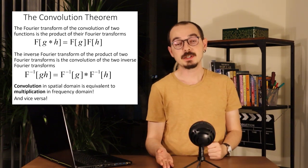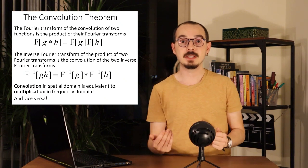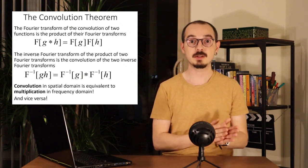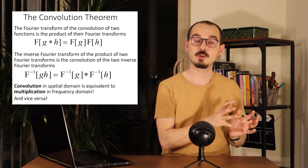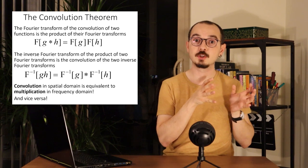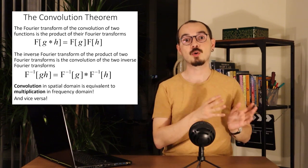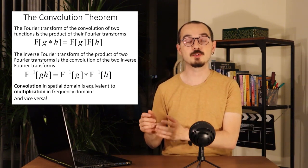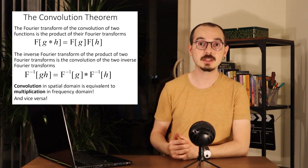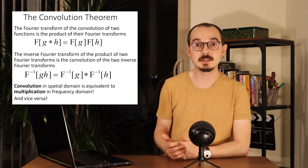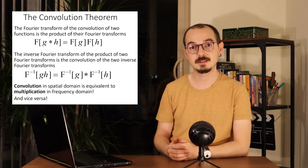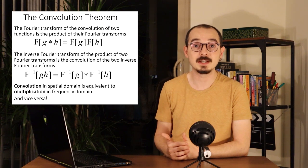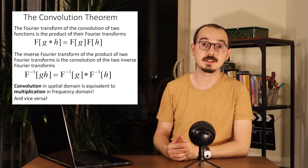Convolving an image in the spatial domain means filtering. This means we can take the Fourier transform of the kernel and, instead of convolving, simply multiply the Fourier transforms of the two images and still get the same filtering result. And that is actually how we classify different types of filters.